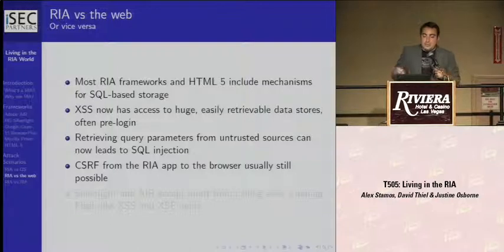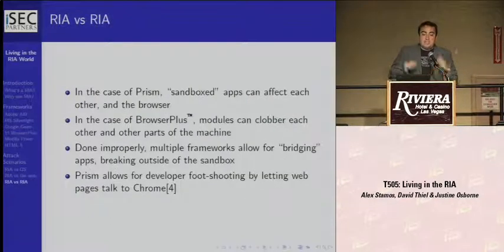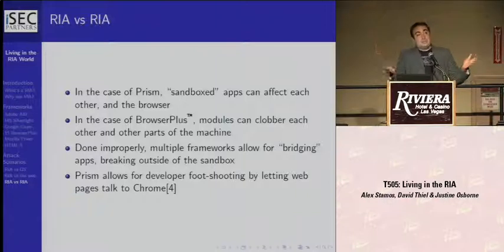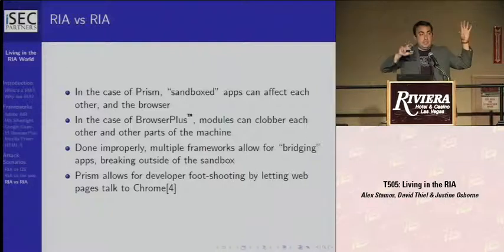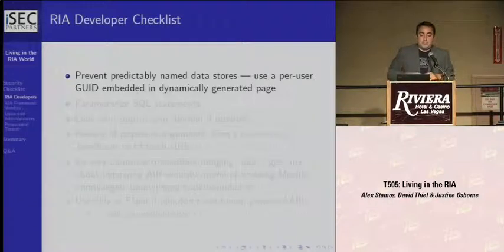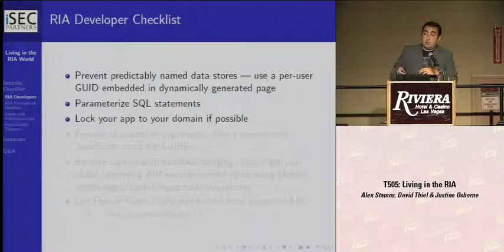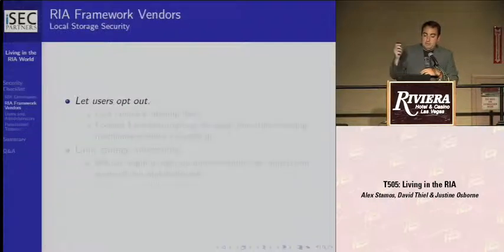CSRF is something interesting from RIA apps. In the case of Prism, we have sandbox apps that can affect each other and do all of the nasty XPCom stuff. In the case of Browser Plus, you have modules running with full executable locally — things like ImageMagick, which has all these algorithms that are extremely dangerous and have had buffer overflows in the past. We can also chain these frameworks together: you can launch an AIR application from inside a Prism app, for example.